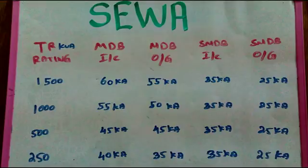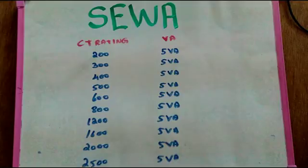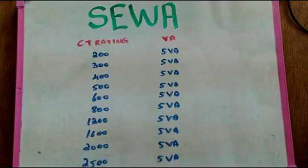So, what are the standards of CTs? The standard values are: 200, 300, 400, 500, 600, 800, 1200, 1600, 2000, 2500. This is the CT system — the current transformer, mid-ring. This is the 5VA output and the current transformer output.